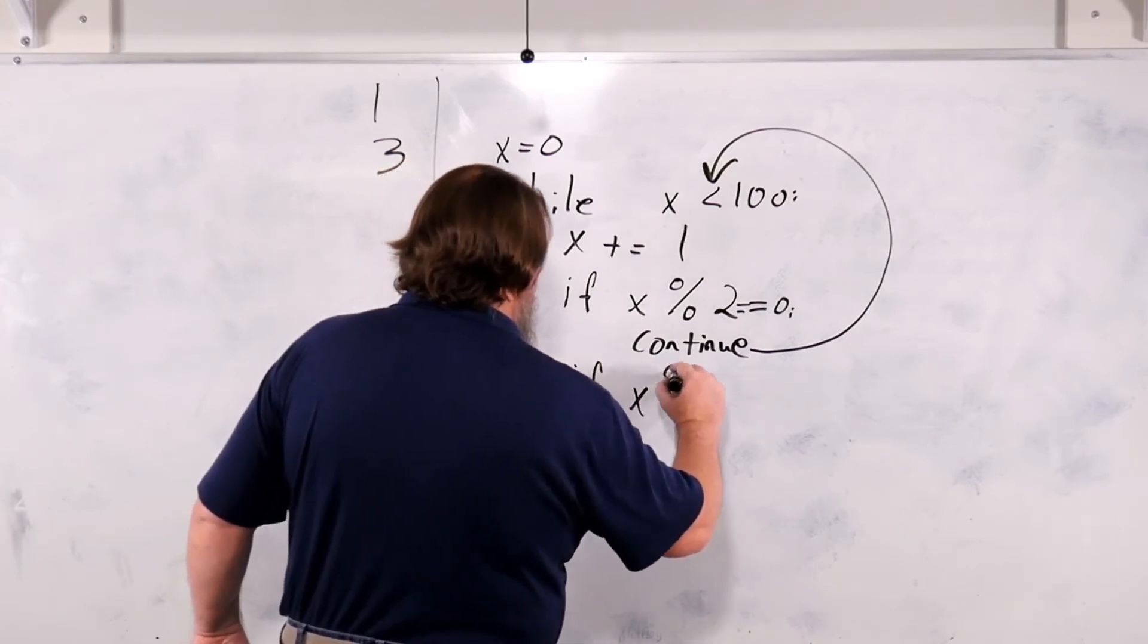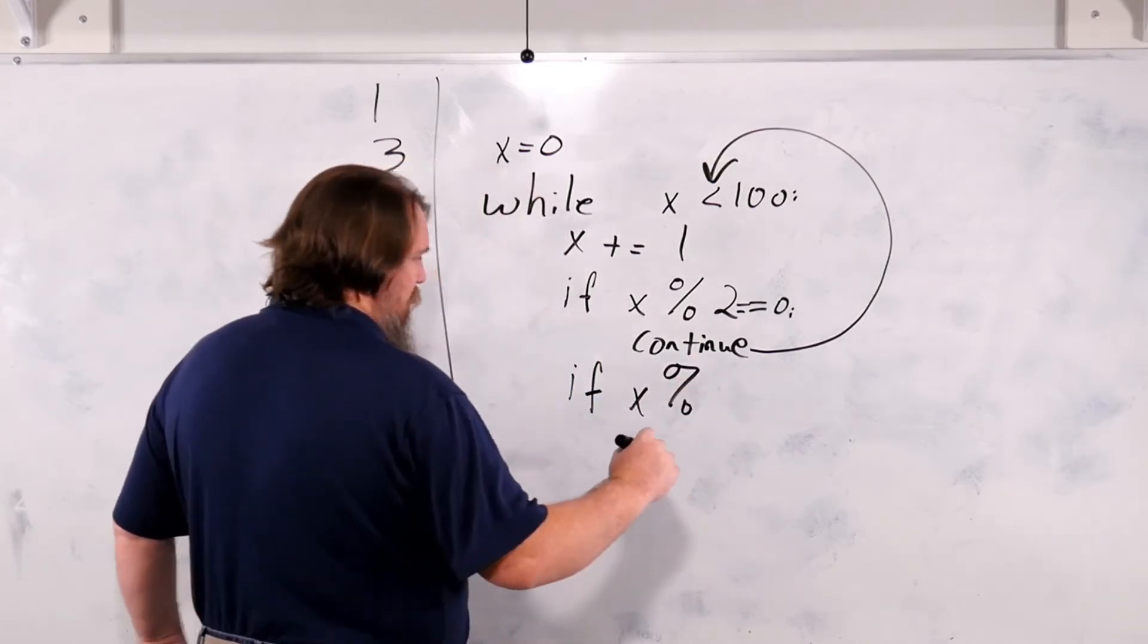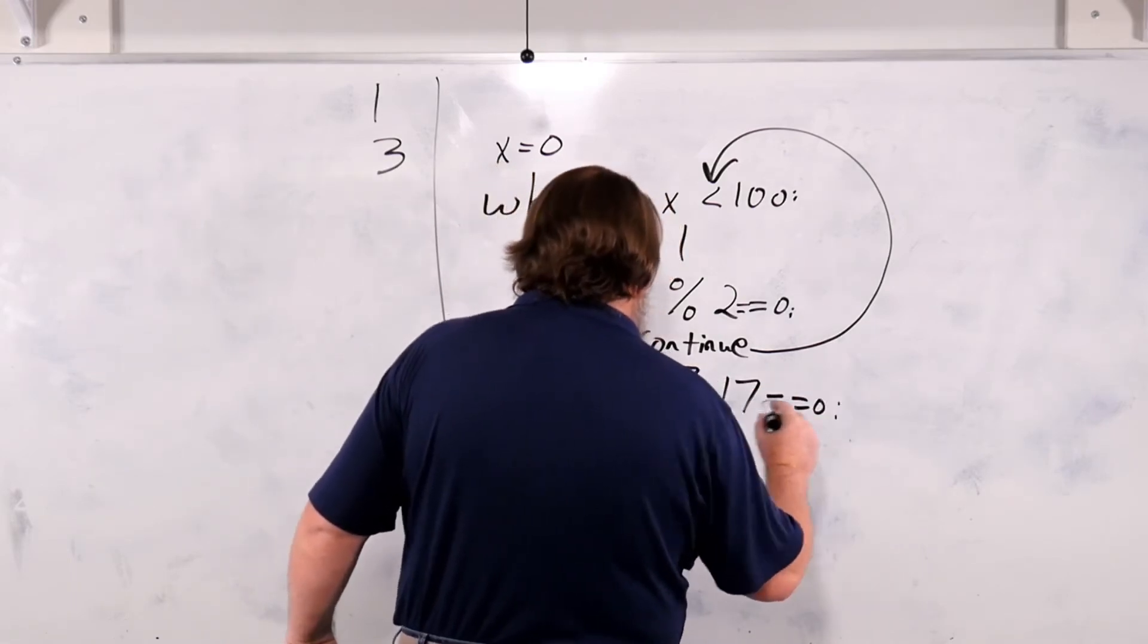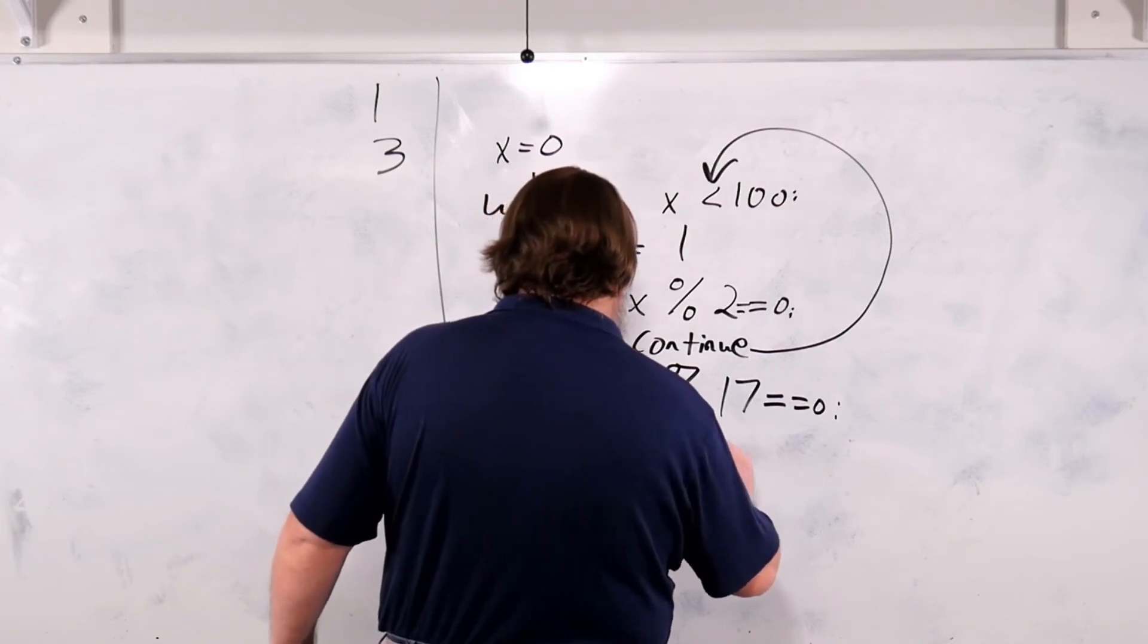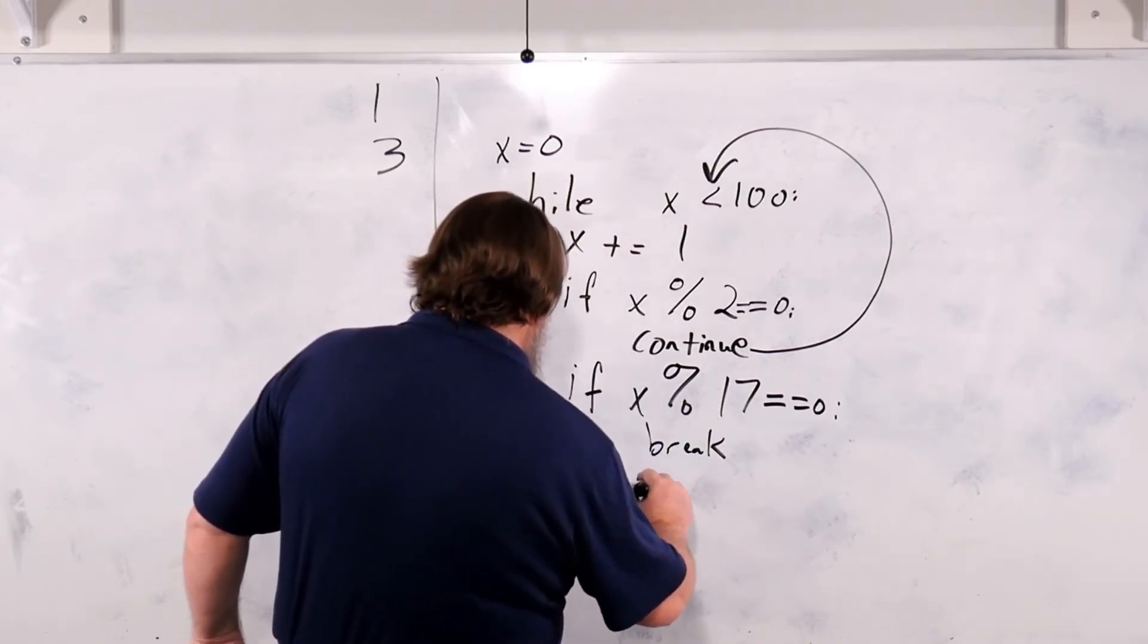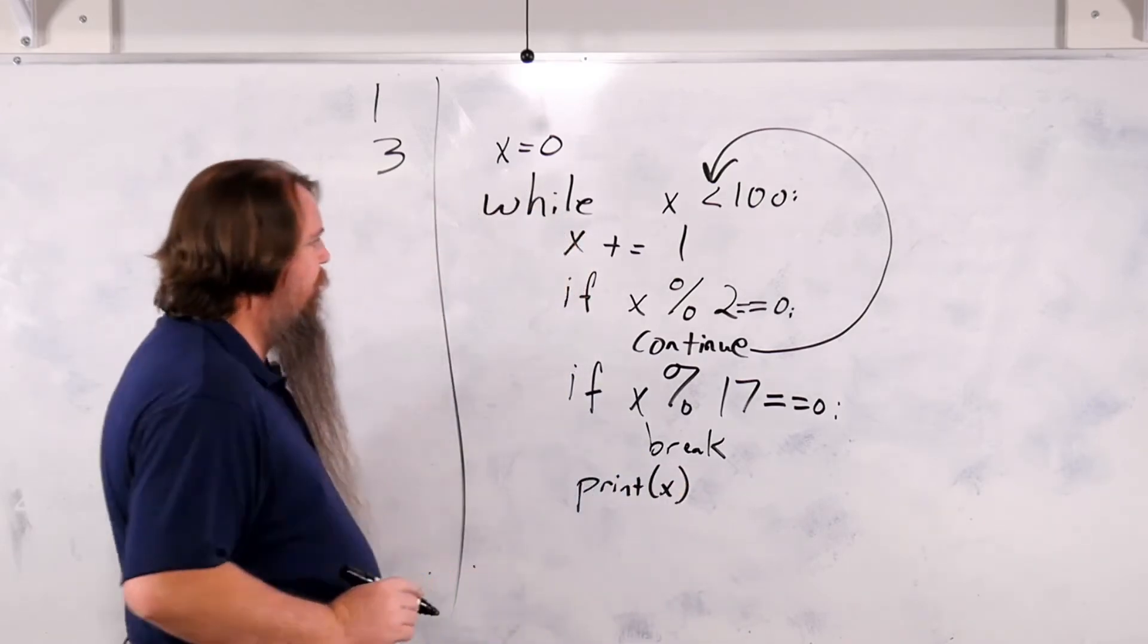If x mod 17 equals 0, break. And now we'll say print x.